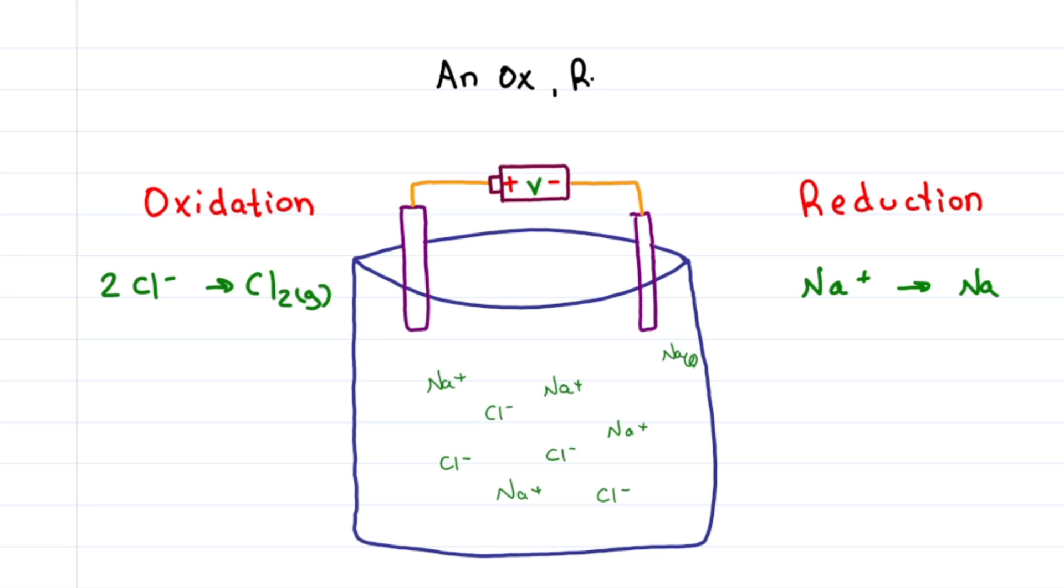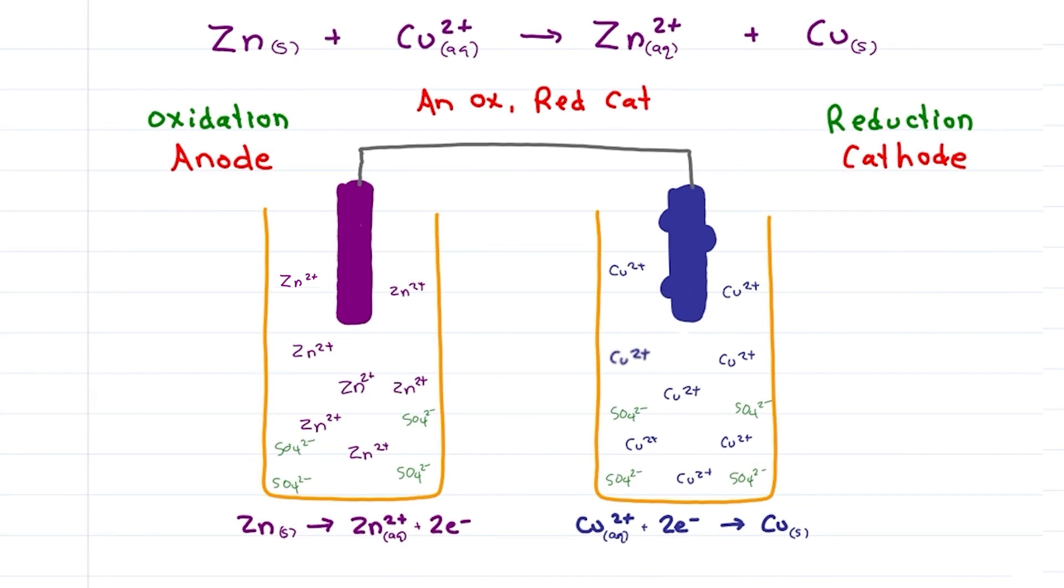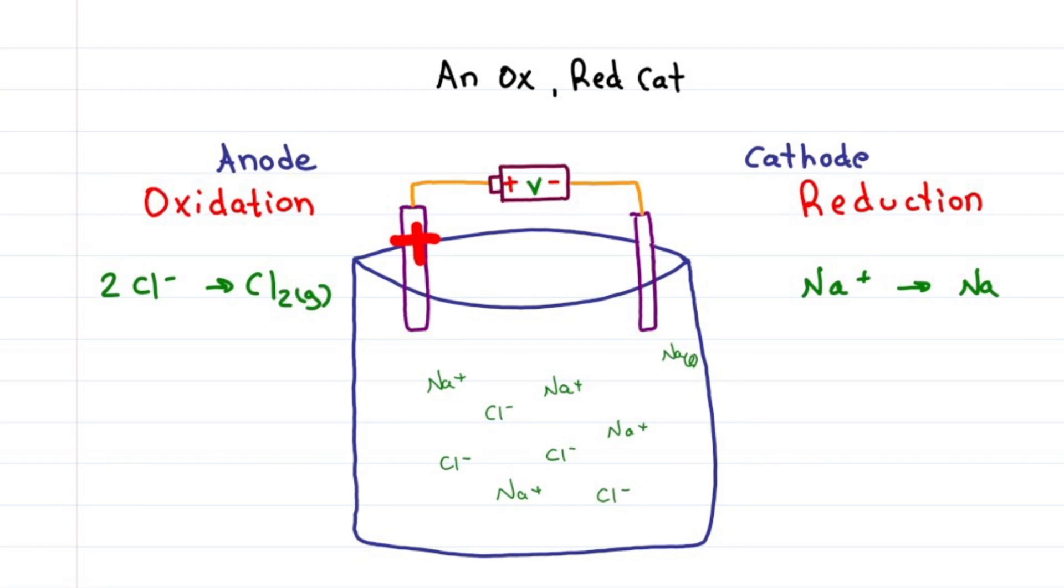Remember an ox and a red cat? Since oxidation happens on the left, this is our anode and reduction on the right gives us our cathode. But look out for the charges. In the galvanic cell, the anode was negative and the cathode positive. Here, the anode is positive and the cathode is negative. How does this make sense?